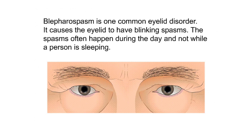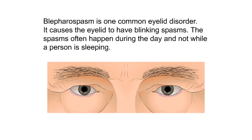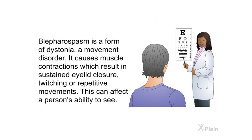Blepharospasm. Blepharospasm is one common eyelid disorder. It causes the eyelid to have blinking spasms. The spasms often happen during the day and not while a person is sleeping. Blepharospasm is a form of dystonia, a movement disorder. It causes muscle contractions which result in sustained eyelid closure, twitching, or repetitive movements. This can affect a person's ability to see.